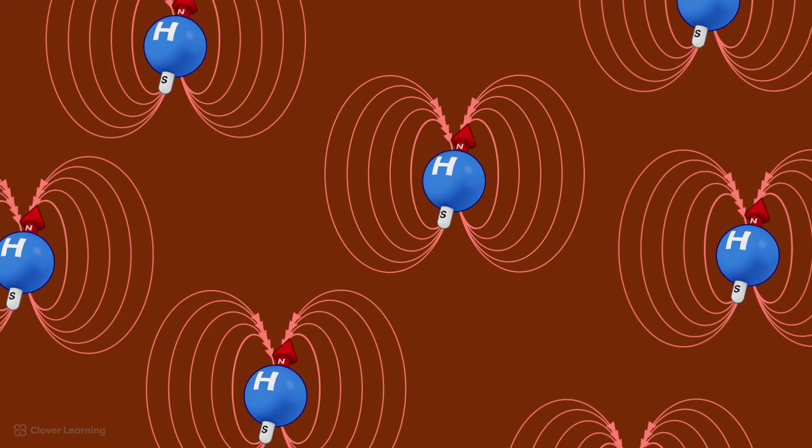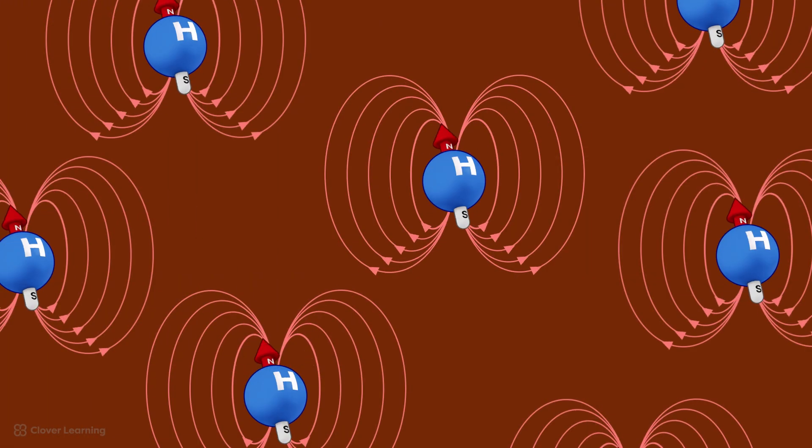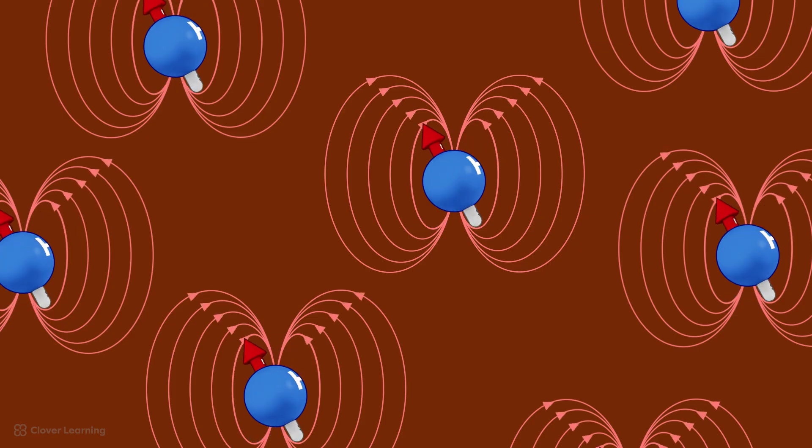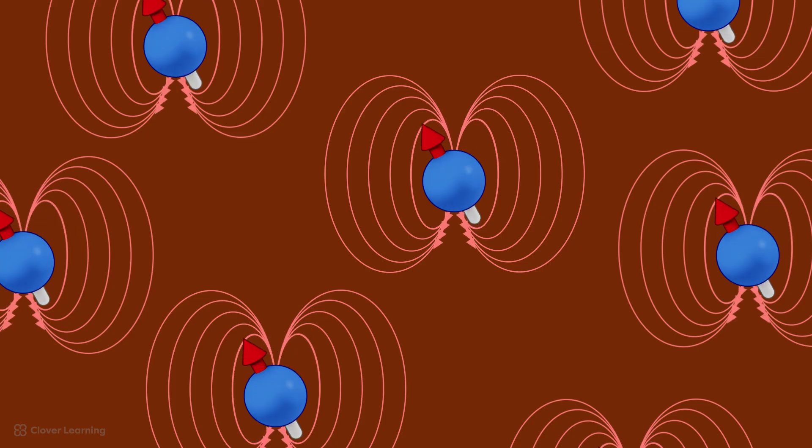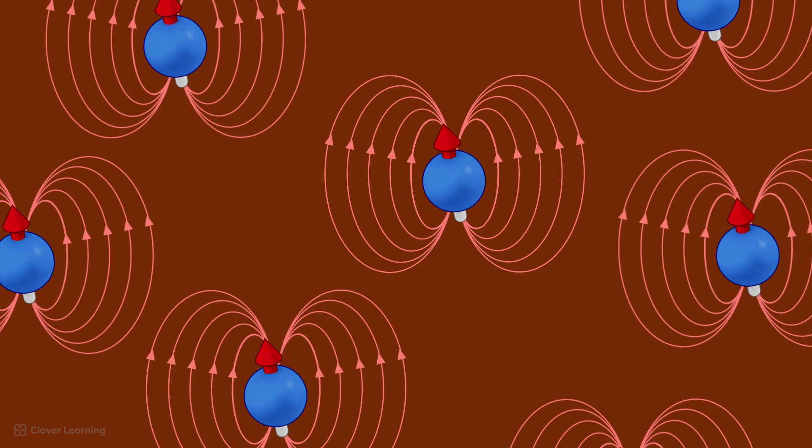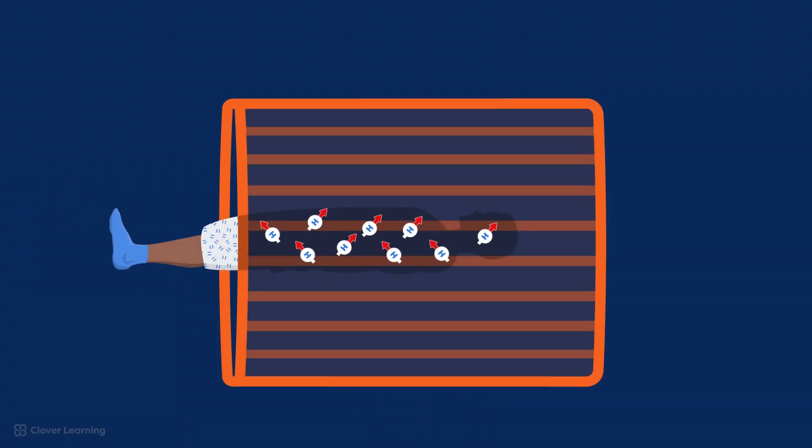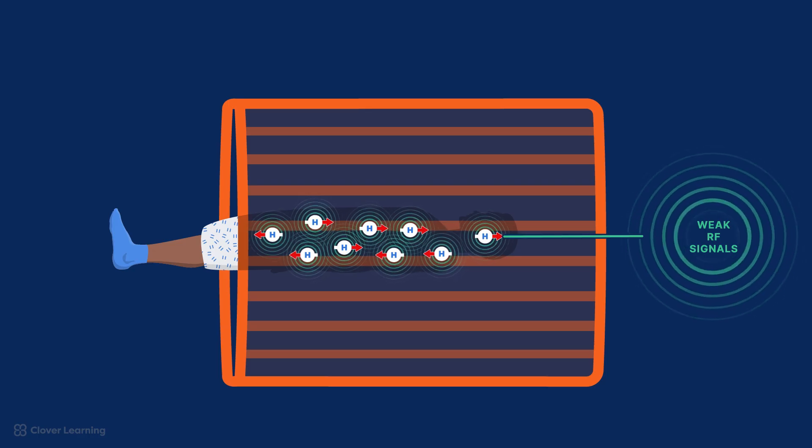As the hydrogen nuclei in different tissues return to their resting state, these positively charged particles are still spinning and producing small magnetic fields. As these excited hydrogen nuclei relax, their magnetic fields cross the receiver coil and induce a voltage. The greater the voltage, the brighter the tissue on the final image.